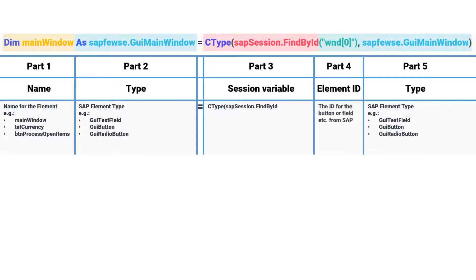The fourth part is the ID of the element in SAP. For example, Windows 0, or Windows 0 toolbar 1 button 17.